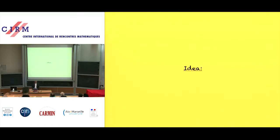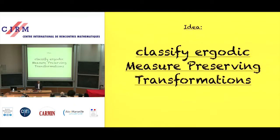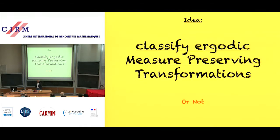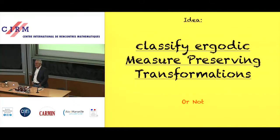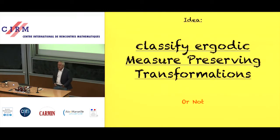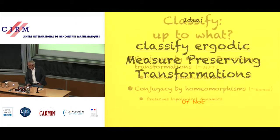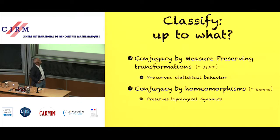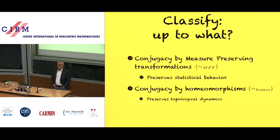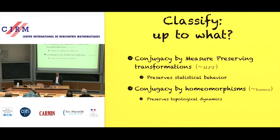The idea behind all of this is to classify the measure-preserving transformations. The question of classification always comes down to classify up to what, and here there are a couple of natural choices. The first is conjugation by measure-preserving transformations, which I'll write as equivalence sub-MPT. This is a very attractive kind of classification because it captures the statistical behavior of your system, in particular of stochastic processes.